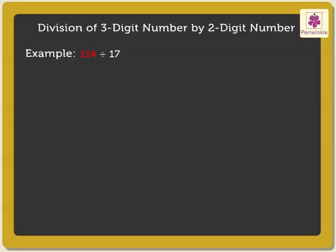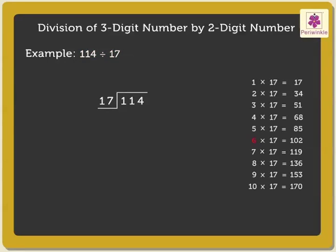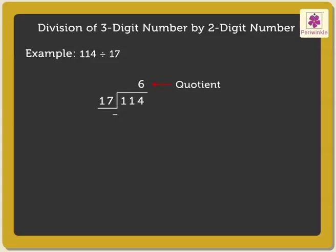Divide 114 by 17. We know that 6 into 17 is equal to 102. So, we write 6 in the quotient and subtract 102 from 114 to get the remainder as 12.